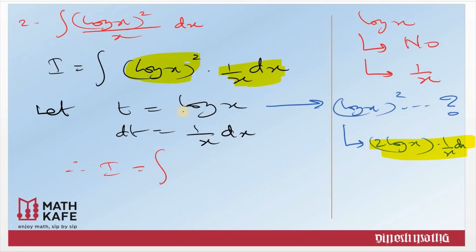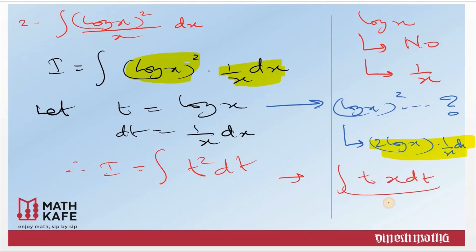Therefore the integral is reduced to t² dt. A word of caution: please never write an integral with both x and t at the same time — you cannot integrate two variables simultaneously. No mixing of variables. It should always be with one variable alone. We have totally transformed the x variable into the new variable t, so the integration involves only a single variable.